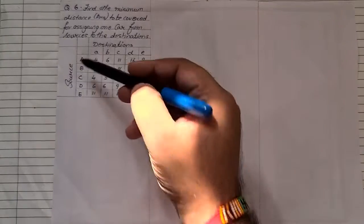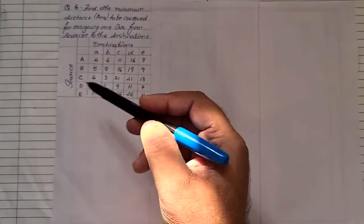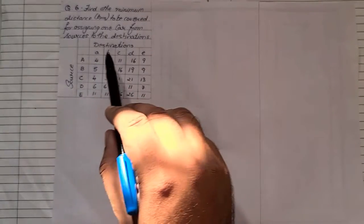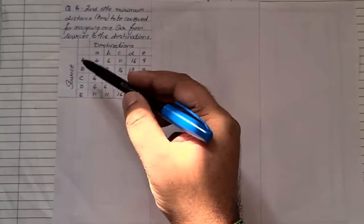Find the minimum distance to be covered by assigning one car from source to destination. There are five destinations and five sources, so it is a balanced matrix. Now let us see how to solve this sum when they ask you to minimize — it is a minimization sum.